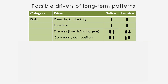I've pulled together some possible drivers of long-term patterns, drawing on David Strayer's 2006 paper in Trends in Ecology and Evolution. Possible biotic drivers include phenotypic plasticity and evolution, which would have positive effects on both native and invasive species — for example, a more phenotypically plastic native species may better tolerate an invader, or an invader may evolve to be more invasive. For the release or accumulation of enemies — insects or pathogens — or changes in community composition including successional processes, there could be multiple hypotheses about the direction of change.